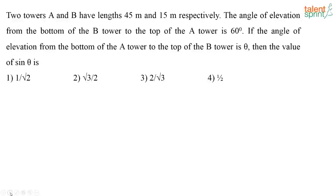I have taken a few questions on heights and distance. Let's try it out. Two towers A and B have lengths 45 meters and 15 meters respectively. The angle of elevation from the bottom of tower B to the top of tower A is 60 degrees. If the angle of elevation from the bottom of tower A to the top of tower B is theta, then the value of sine theta is?